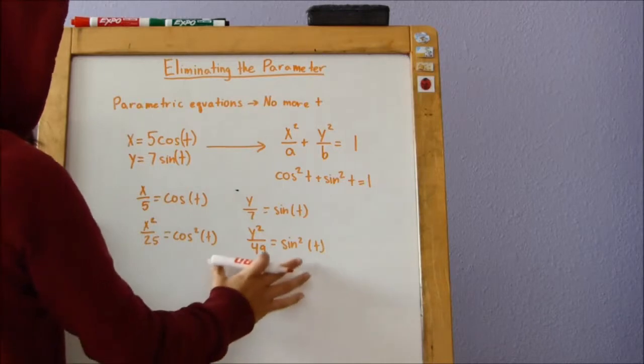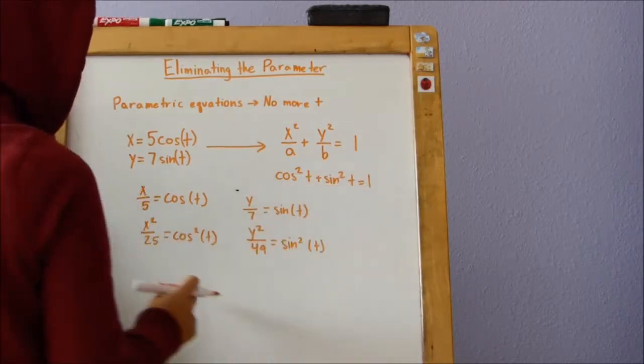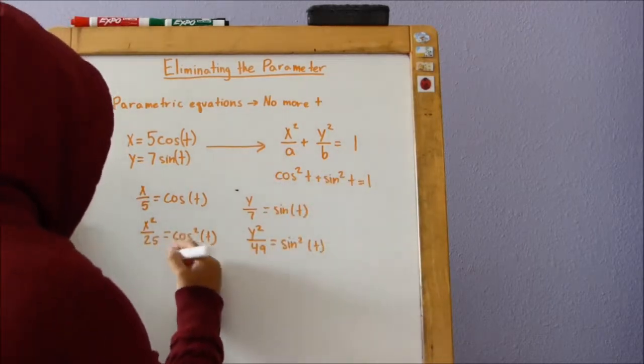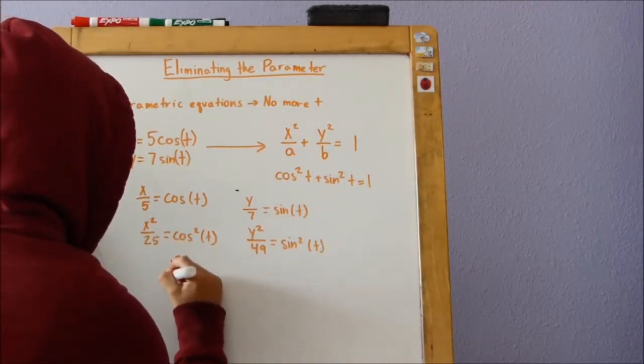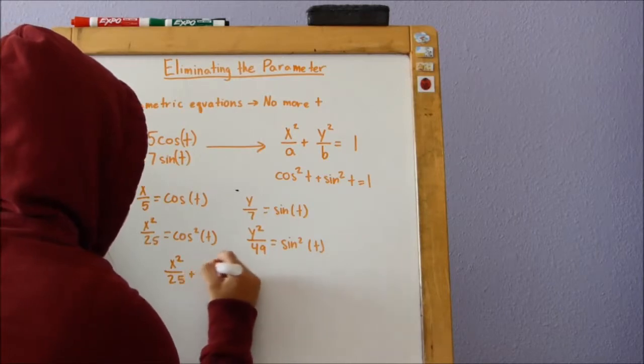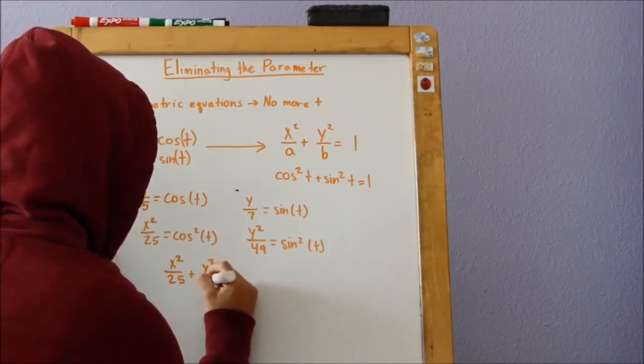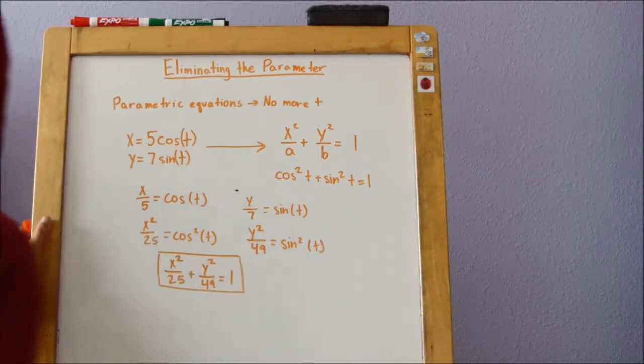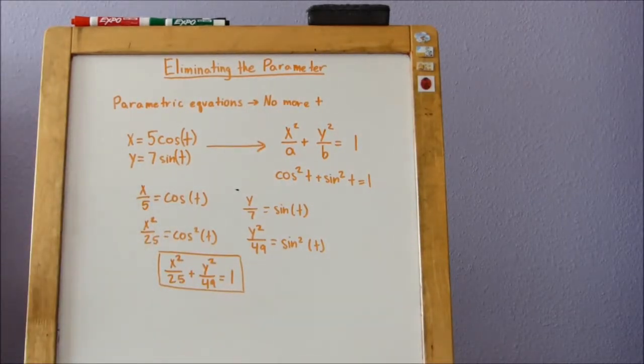And now we add these two sides together to make 1. And then we add these two sides to make this part of the 1. x squared divided by 25 plus y squared divided by 49 equals 1. That is our final answer. And that is how you eliminate the parameter in a cosine or a sine equation.